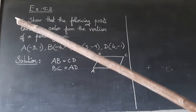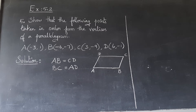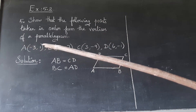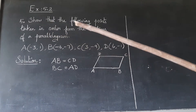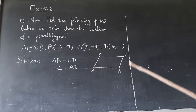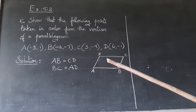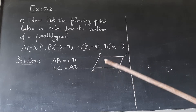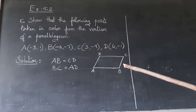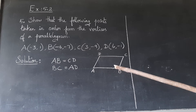Hello class 9, let's see the fifth sum from Exercise 5.2, Lesson 5 - Coordinate Geometry. Show that the following points taken in order form the vertices of a parallelogram. For a parallelogram, opposite sides are parallel and equal, so we need to prove AB is equal to CD and BC is equal to AD - the opposite sides are parallel. So we will find AB distance and CD distance.